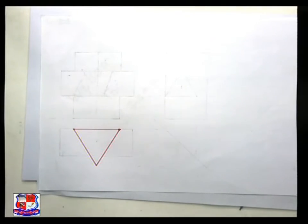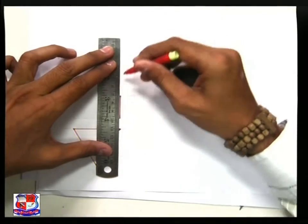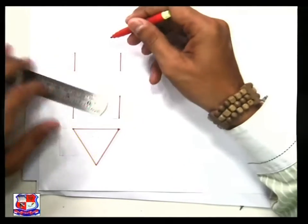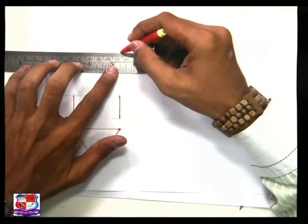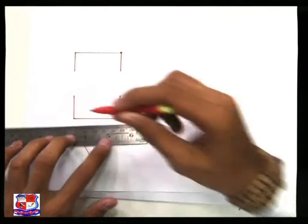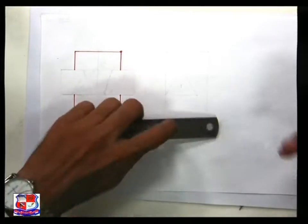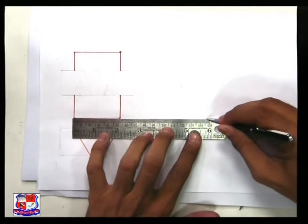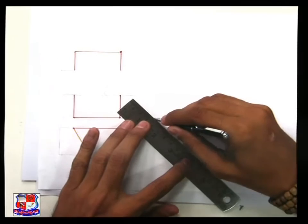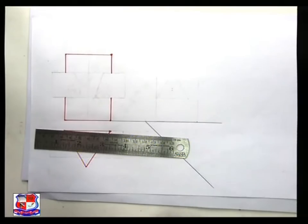This is the front view. To draw the top view, take projection from this end to here and from this bottom face to here. This is a triangular prism, so in the front view it appears as a rectangle. The XY line represents the intersection of both planes HP and VP. We draw a meter line to take projection from the top view and transfer it to the side view.